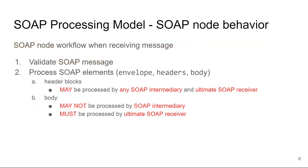We are going to talk about the SOAP processing model, which defines how a SOAP node in either role should behave when receiving a SOAP message. When receiving a SOAP message, the node needs to validate that message — syntactic validation of XML, then validation of the SOAP elements, whether there is the correct envelope, the correct body, and whether the correct SOAP version is used. If the message does not pass validation, a fault is returned right away. When it passes, the SOAP message can be processed, and here we distinguish header blocks and the body. Header blocks can be processed by any SOAP intermediary or the ultimate SOAP receiver.